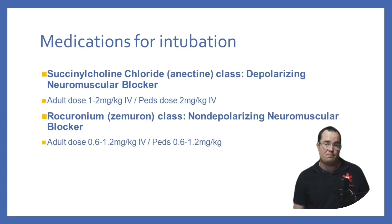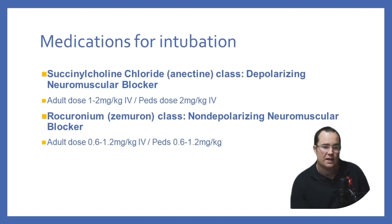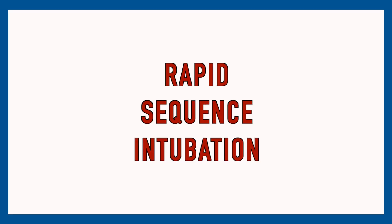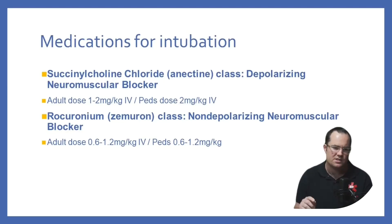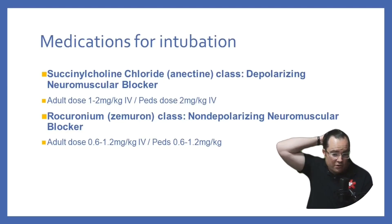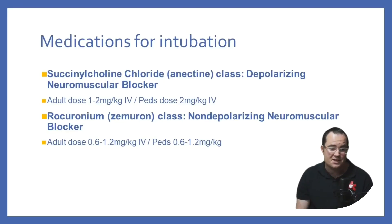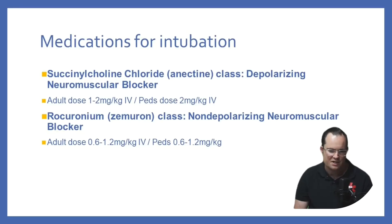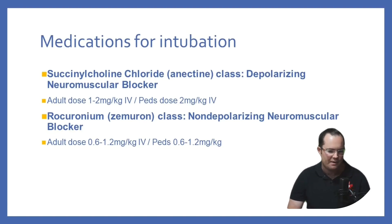Succinylcholine and rocuronium are two very common induction agents for paralysis. We use them as neuromuscular blockers to assist with RSI — rapid sequence intubation. The easy part is the dose: it can be one milligram per kilogram for both of them. One milligram per kilogram for succinylcholine, one milligram per kilogram for rocuronium.